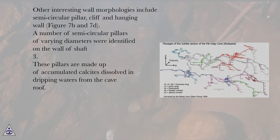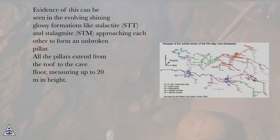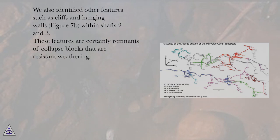Other interesting wall morphologies include semicircular pillar, cliff, and hanging wall (figures 7b and 7d). A number of semicircular pillars of varying diameters were identified on the wall of shaft 3. These pillars are made up of accumulated calcites dissolved in dripping waters from the cave roof, evidenced by evolving shining glossy formations like stalactite (STT) and stalagmite (STM) approaching each other to form an unbroken pillar. All the pillars extend from the roof to the cave floor, measuring up to 20 meters in height. Cliffs and hanging walls (figure 7b) were also identified within shafts 2 and 3, and are certainly remnants of collapsed blocks resistant to weathering.